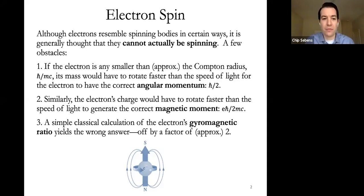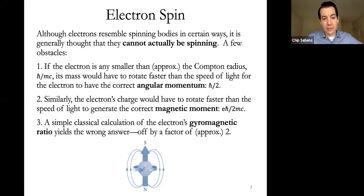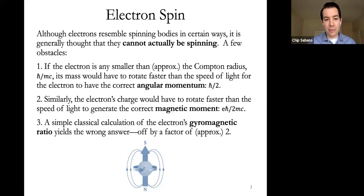The common wisdom regarding electron spin is that electrons in some ways act like they spin, but they don't really spin. Textbooks explain that electrons have a property called spin, but you're not supposed to think of them as actually spinning. One reason given is that they'd have to spin faster than the speed of light: given the known angular momentum of the electron as h-bar over two, if the electron is smaller than the Compton radius, its mass has to rotate faster than light to generate that angular momentum.